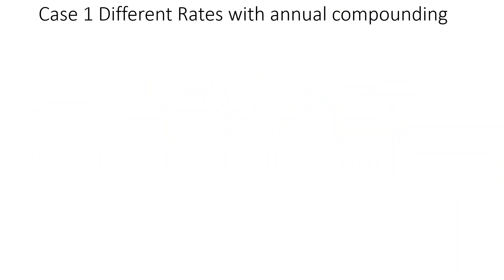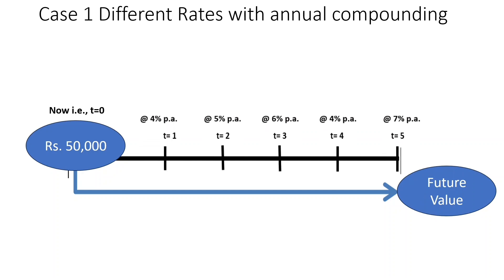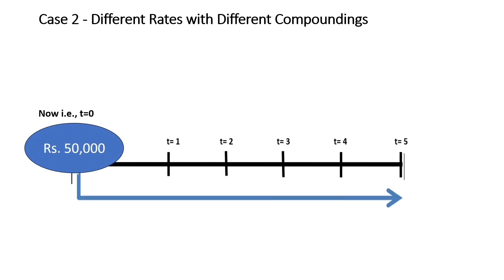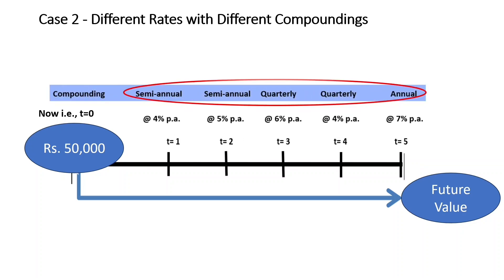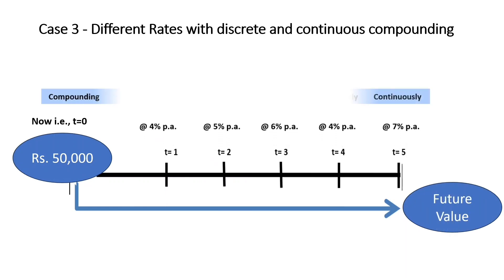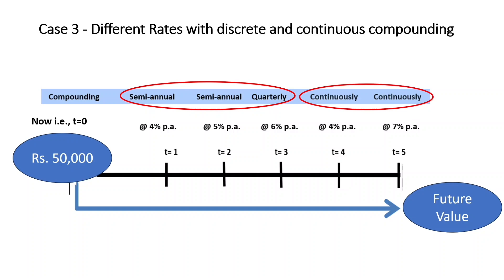In case number one, which is the simplest, with changes in the rates of interest in different years, there is annual compounding for all the years. In case number two, the different rates of interest in different years are associated with changes in the compounding. Case number three is similar to case number two, where the compounding is divided into two parts — for certain years there is discrete compounding, while for some years there is continuous compounding.